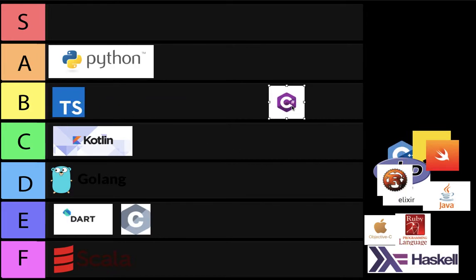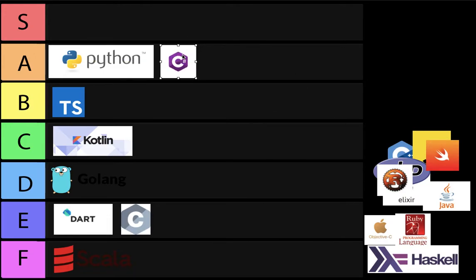We got C#. Most gaming and computer software — especially Windows software — and sometimes native apps are created with it. This language is promoted by Microsoft and has very useful support in Visual Studio. It has its own SDK, so it's a very useful language. And not to forget to mention that ASP.NET is built on it. So yeah, it's a very popular back-end language.